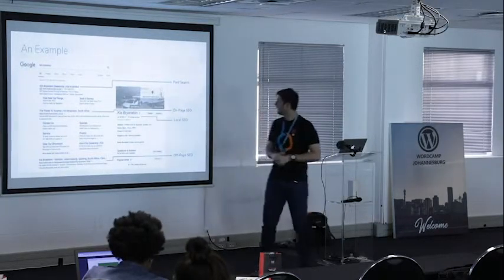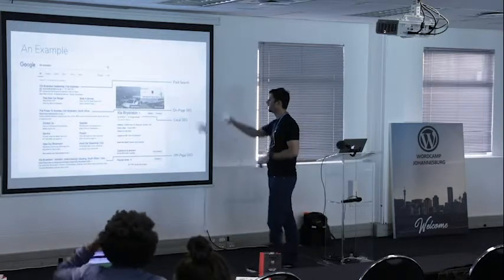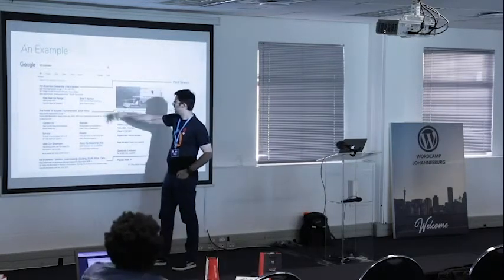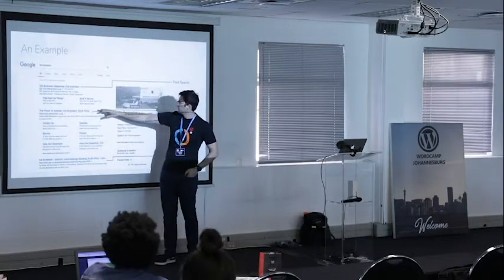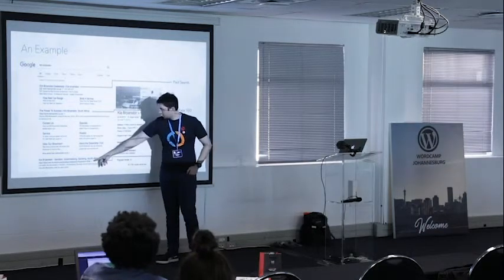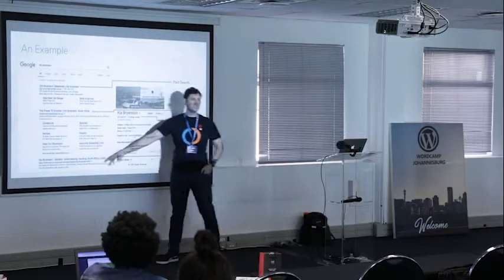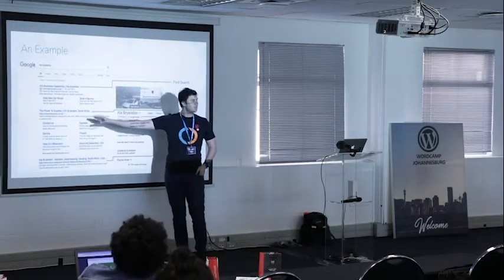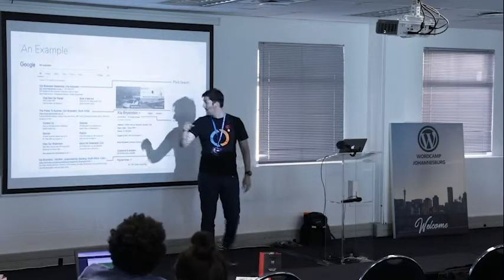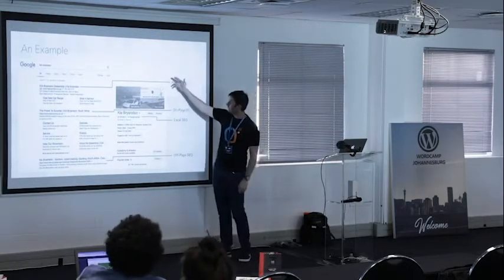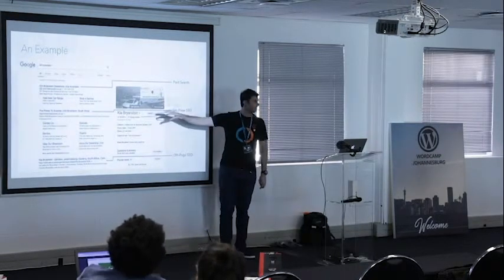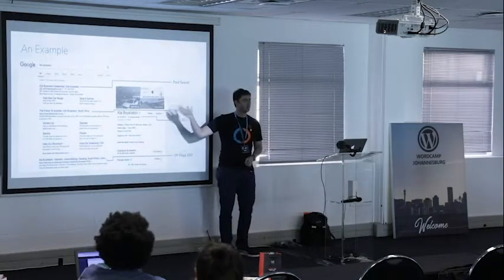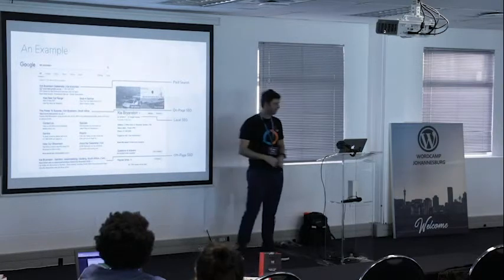Here's an example with all the different components. At the very top you can see there's a paid search ad — I searched for Kia Brunston. Below that we have an organic result, which is not paid for, that's their actual website. Below that is a cars.co.za website — that's off-page SEO, someone else linking to their website. And on the right-hand side, for desktop, you can see the Google My Business panel with pictures, directions, reviews around the branch.